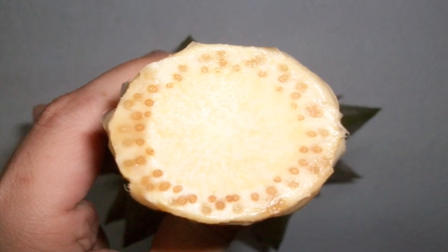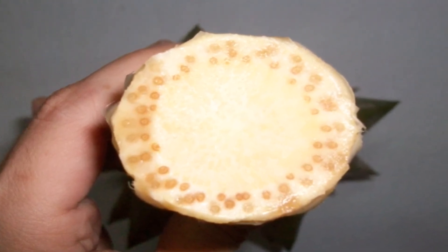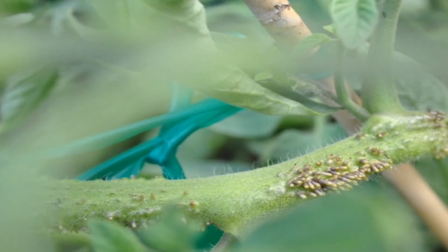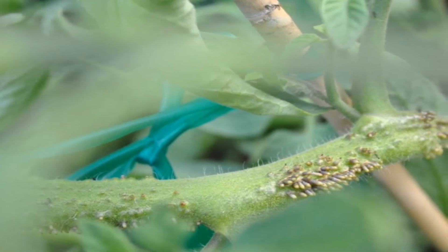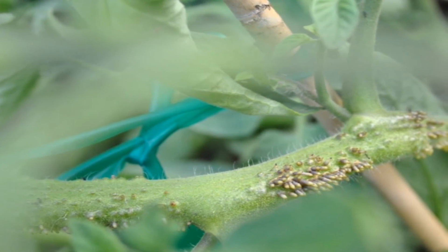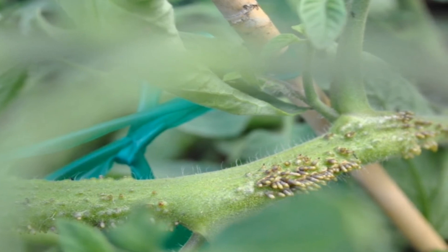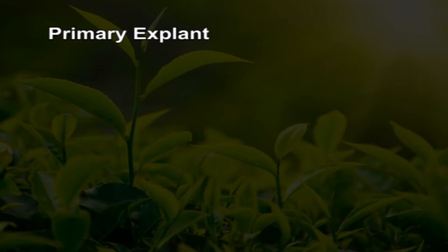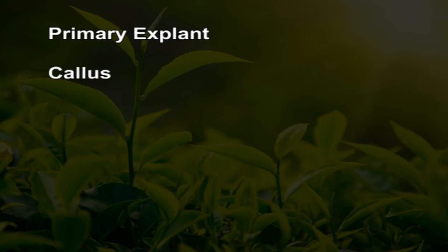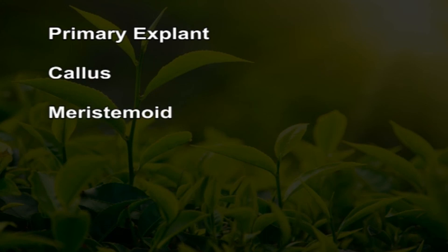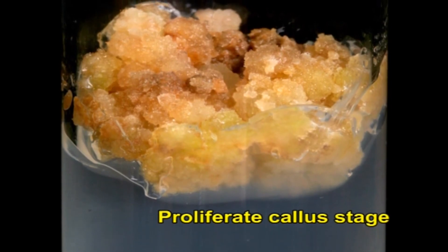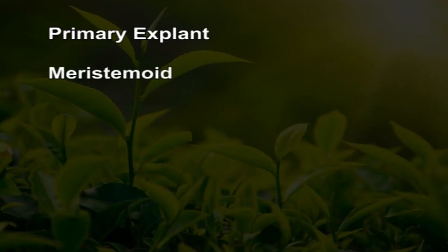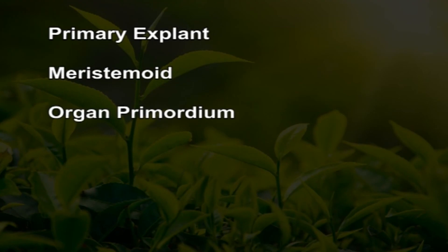Plant tissues in vitro may produce many types of primordia, including adventitious buds and organs that will eventually differentiate into embryos, flowers, leaves, shoots and roots. These primordia originate de novo from a cellular de-differentiation process followed by initiation of a series of events that result in their formation. A developmental sequence involving an intervening callus stage is termed indirect organogenesis: the primary explant gives rise to callus, then callus gives rise to meristemoid, and then meristemoid gives rise to organ primordium. Direct organogenesis is accomplished without an intervening proliferative callus stage — hence the primary explant gives rise directly to meristemoid, and organ primordium arises directly from meristemoid tissues.